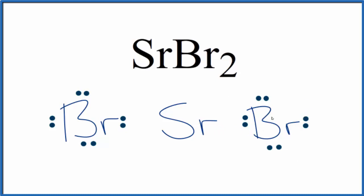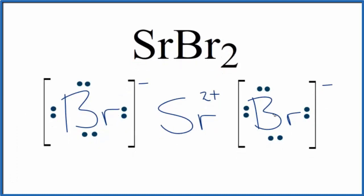Since the bromines each gained an electron, and electrons are negative, each bromine has a negative charge. The strontium lost two electrons, so it becomes Sr2+. We put brackets around the bromines to show the valence electrons were transferred from the metal to the non-metals — they aren't shared like in a covalent bond. This positive ion and two negative ions are attracted, which is what forms the ionic bond.